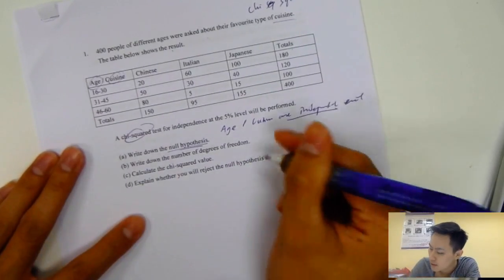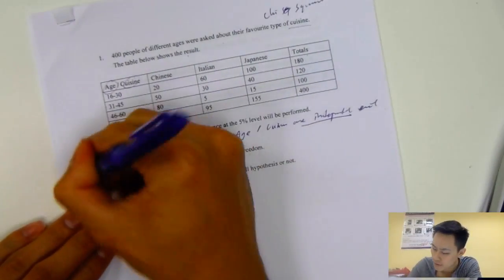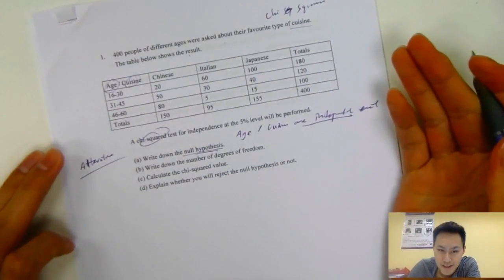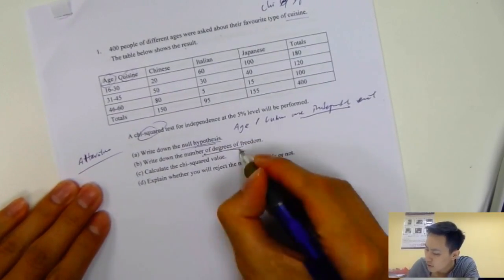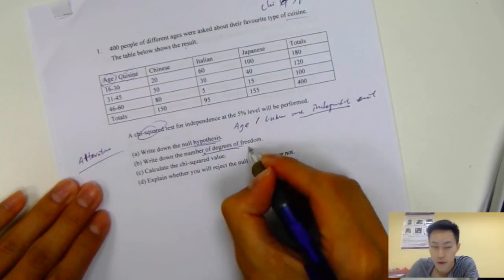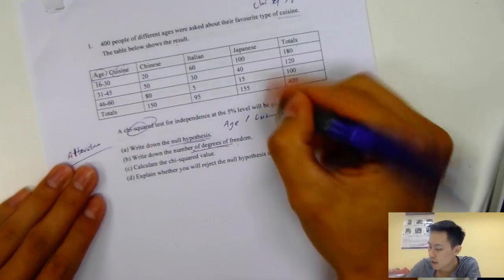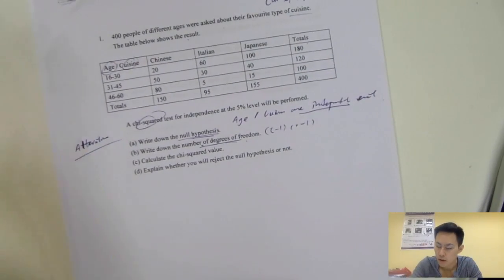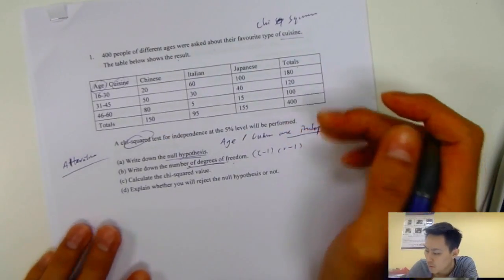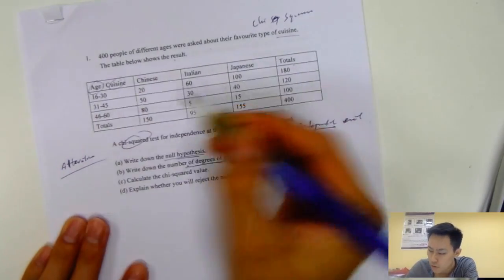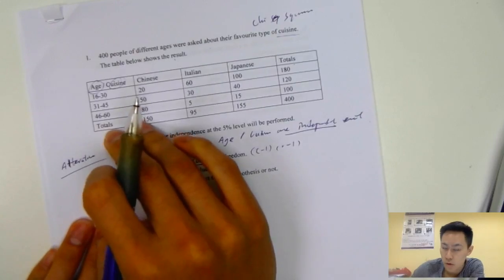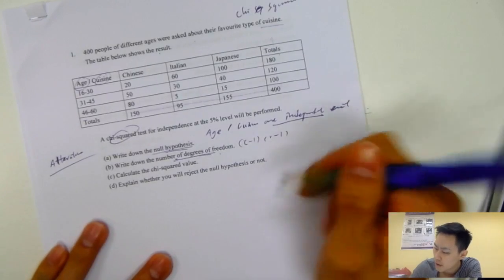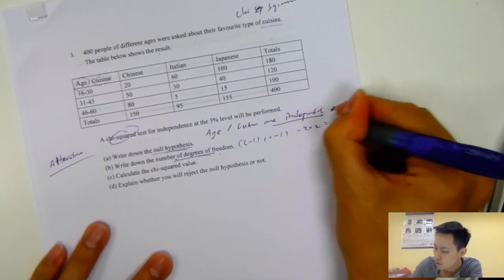If I ask you to write the alternative hypothesis, that means they are not independent events. Then how do you find the number of degrees of freedom? Degree of freedom is basically column minus one, row minus one. You calculate the number of columns and rows: one, two, three. Do I need to calculate the total? Ignore the total. We only have three rows, three columns. So three minus one, three minus one. That's two times two, which equals four.